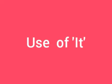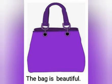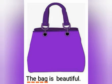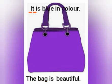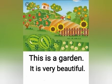Use of 'it'. We use 'it' for a singular animal, place or thing. For example: 'The cat is small. It is so cute.' Instead of 'the cat', we use 'it'. 'The bag is beautiful. It is blue in color.' Instead of 'the bag', we use 'it'. 'This is a garden. It is very beautiful.' Instead of 'garden', we use 'it'.